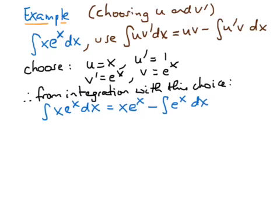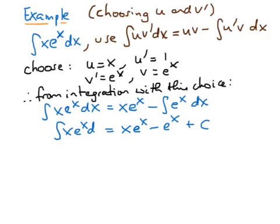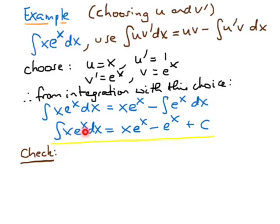Therefore, from integration by parts with this choice, we have that the integral of x·eˣ with respect to x is going to be u·v — so x times eˣ — minus the integral of u prime times v, where u prime is 1 and v is eˣ, so that's just eˣ. We see now that integration by parts is going to let us calculate this integral, because this is a standard integral. So we have x·eˣ minus eˣ, and now we add an integration constant.